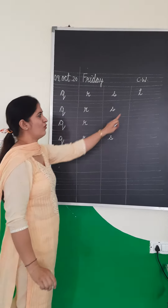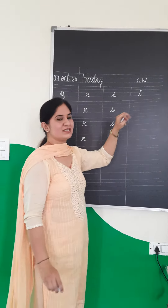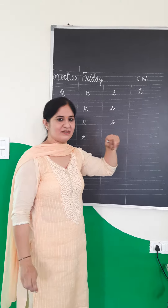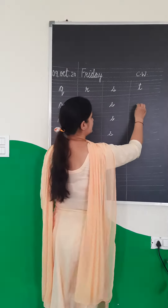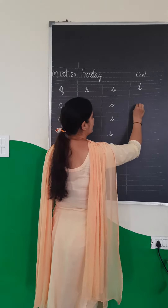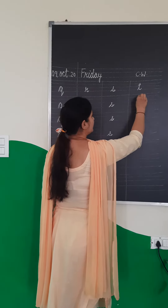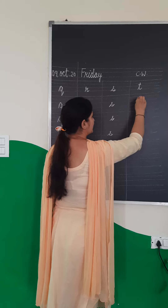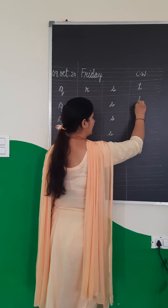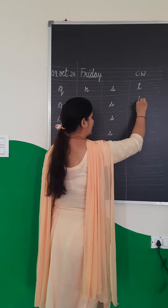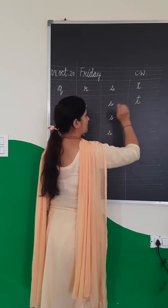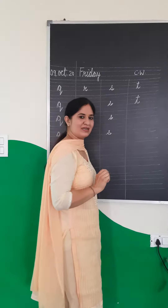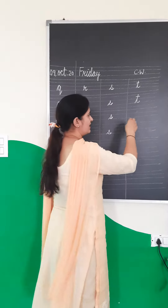Now you write here T. The sound of T is 'T'. Go up, come down and down like this. Make a slipping line like this. T, T.